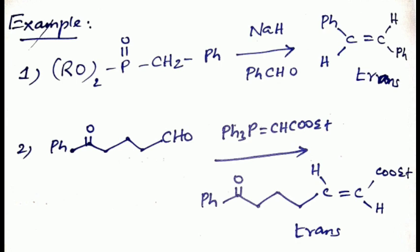These are some examples of Wittig reactions. Both reactants combine with an aldehyde or ester group using a phosphorus ylide to form a trans product, because the ylide contains a stabilizing group.